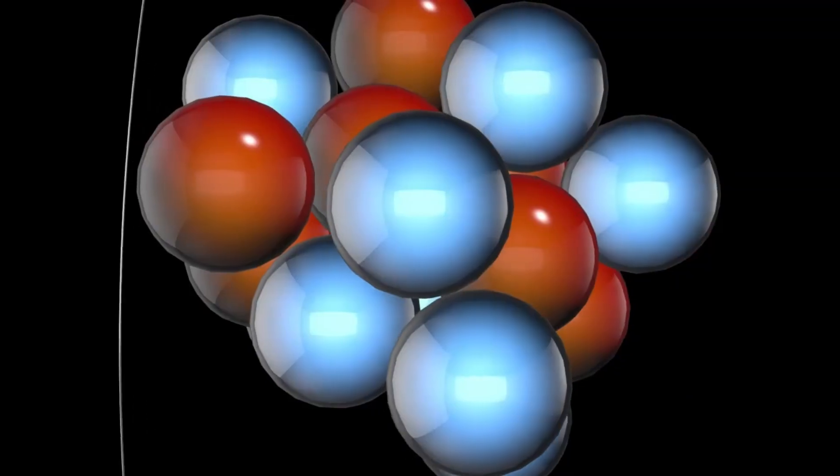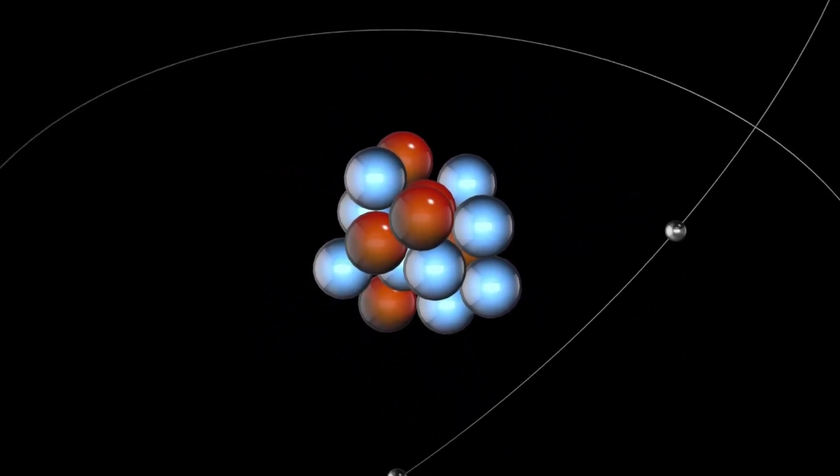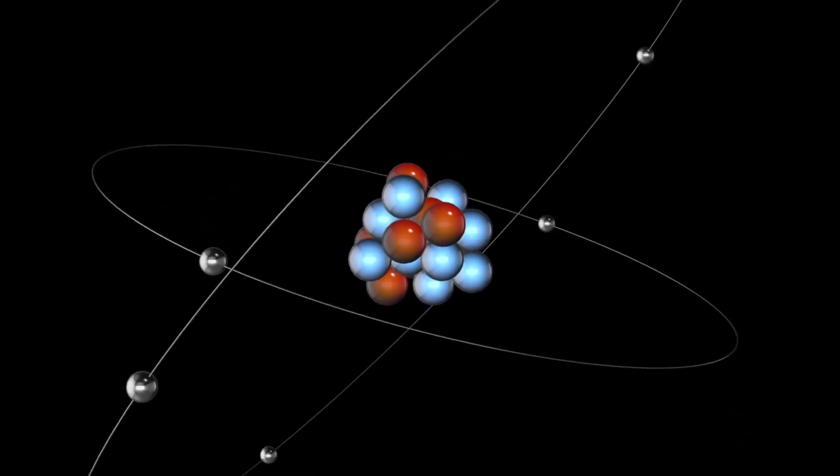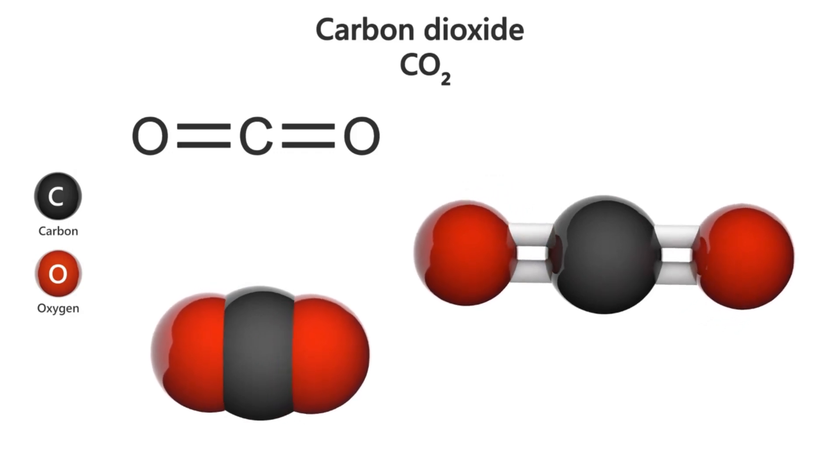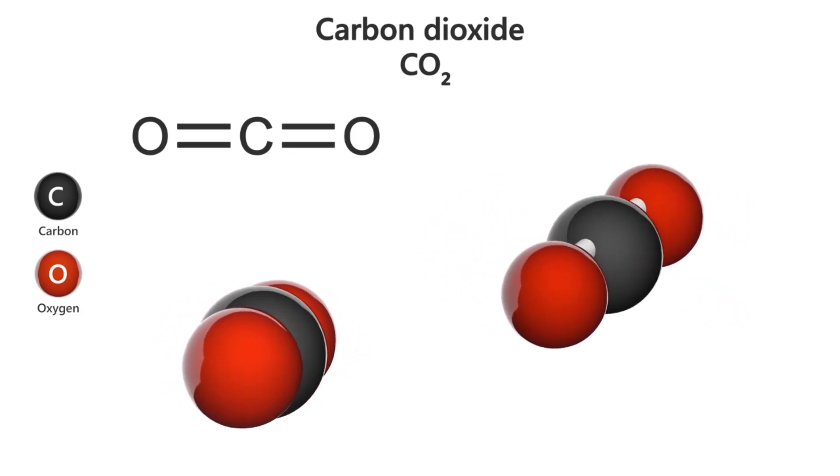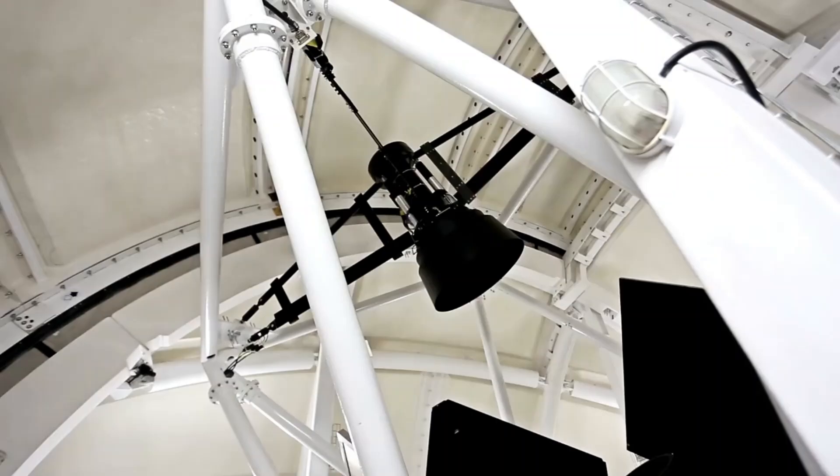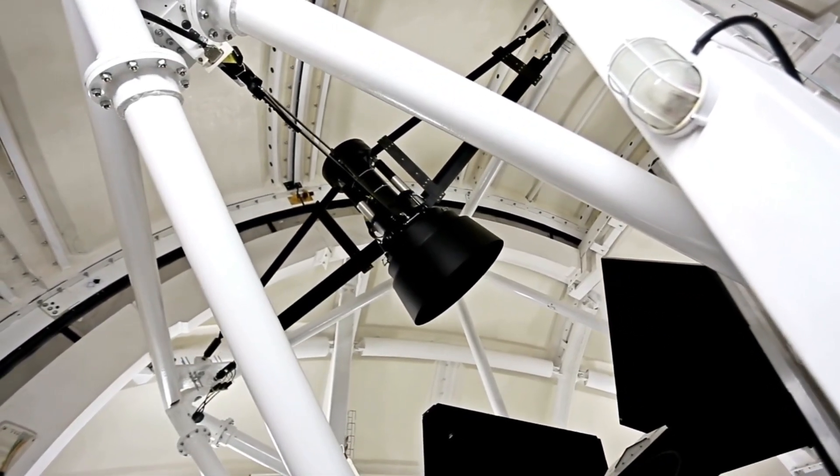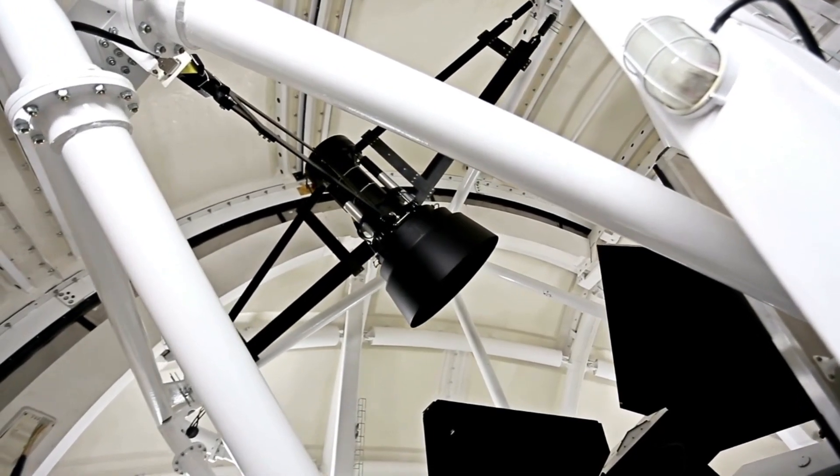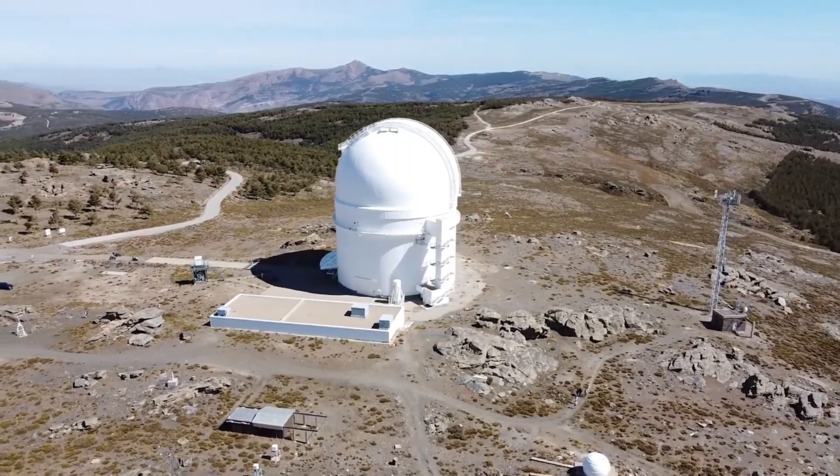This groundbreaking discovery made by the James Webb Space Telescope represents not just a leap forward in exoplanetary research, but also in our understanding of the early universe and the potential for life beyond Earth. As scientists continue to study K2-18b and similar sub-Neptune exoplanets, the line between known and unknown worlds begins to blur, allowing our imaginations and scientific pursuits to wander farther than ever before. The identification of carbon-bearing molecules such as methane and carbon dioxide in the atmosphere of K2-18b, combined with the absence of ammonia, adds a compelling chapter to the ongoing search for habitable environments beyond Earth.